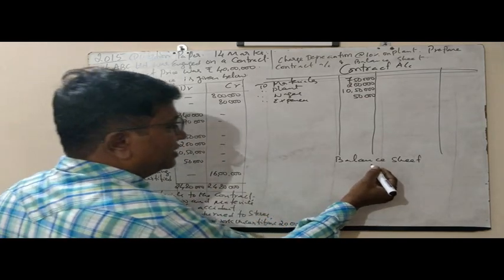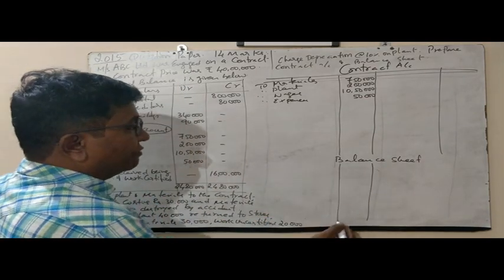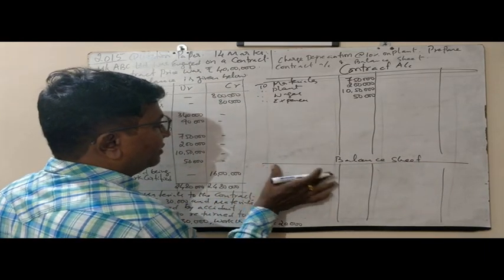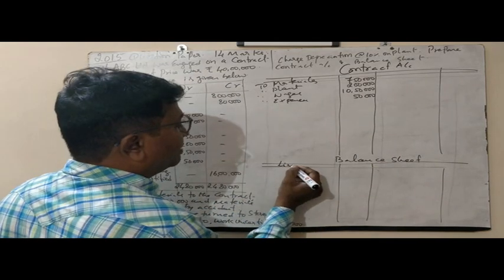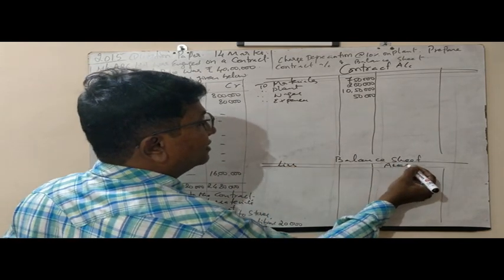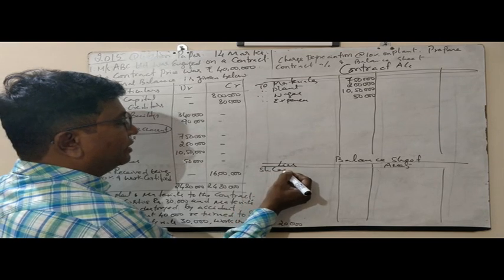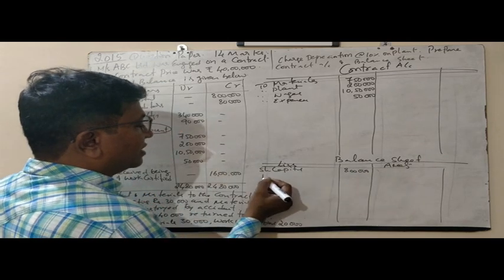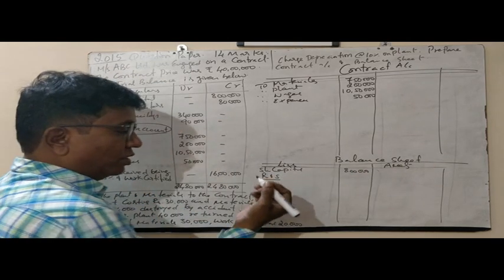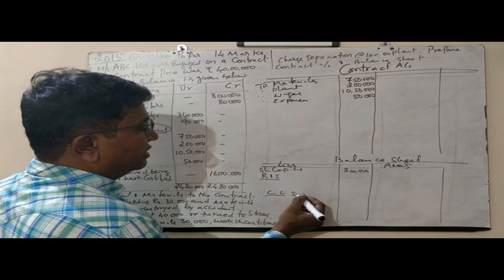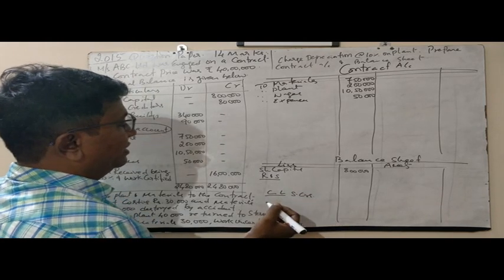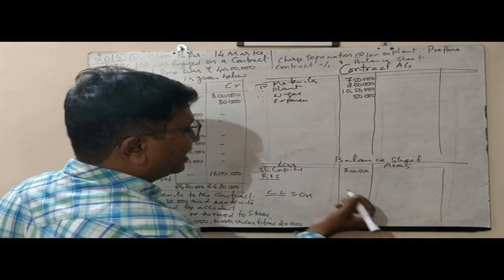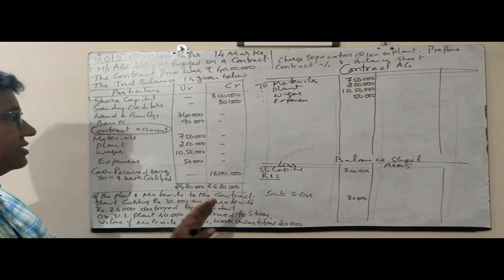Now, what about the share capital? In the balance sheet we have four headings — liabilities and assets. On the liabilities side, we have share capital of 8,00,000. Next is reserves and surplus — we don't know about it yet. Next is current liability: sundry creditors, which is 80,000. So almost all from the trial balance we have taken.